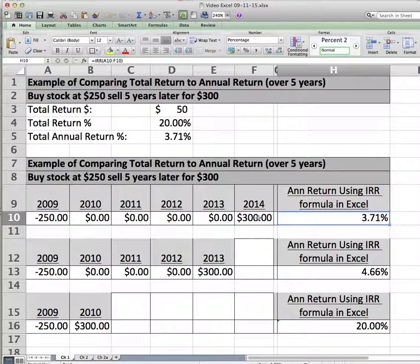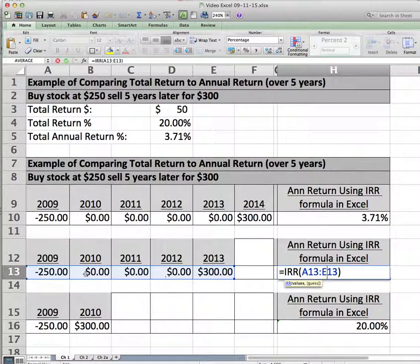Now instead of looking over five years, we want to look over four years of growth. We simply just do the formula over these years, 2009, 2010, 11, 12, 13. We enter zeros for these years again because there's no cash flows, but you need to enter something there.